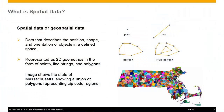But firstly, what is spatial data? Spatial data, or geospatial data, describes the position, shape, and orientation of objects in a defined space. It is represented as two-dimensional geometries in the form of a point, line between two points, and polygons or multi-polygons. The example image here shows the state of Massachusetts in the US, and it is made up of a group or union of polygons.